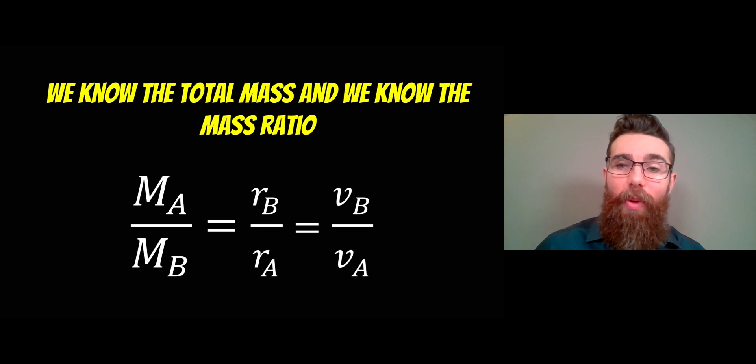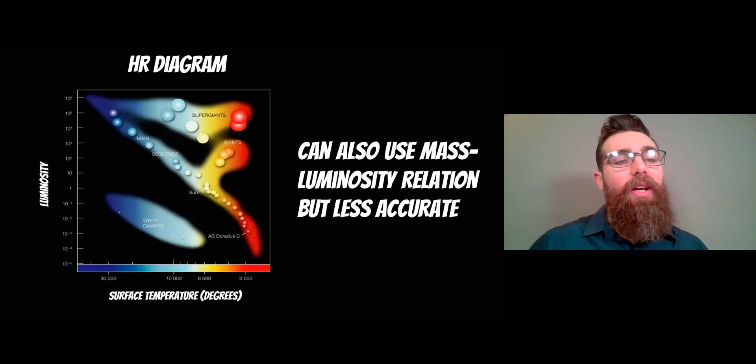There are other ways, so you can use the mass-luminosity relation, but it's less accurate. Here you would assume that a star with some luminosity has a mass due to some relation on the main sequence, but it's less accurate. You're inferring its mass from its luminosity. The most accurate way is to use the binary star system.